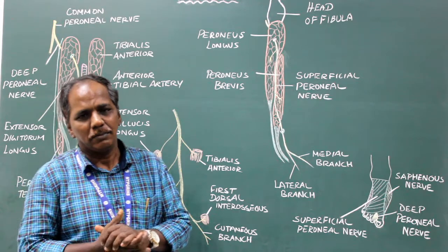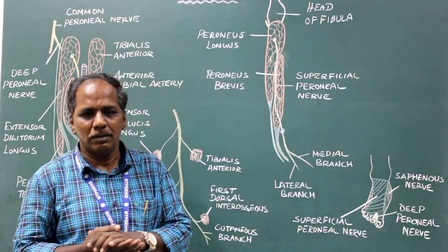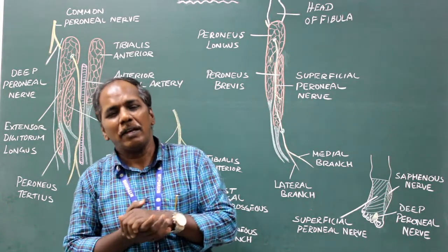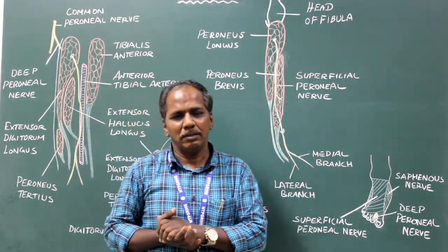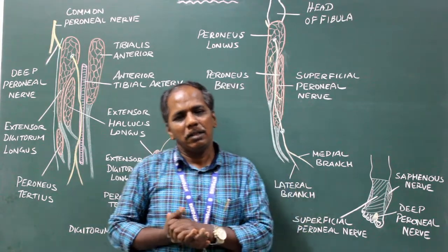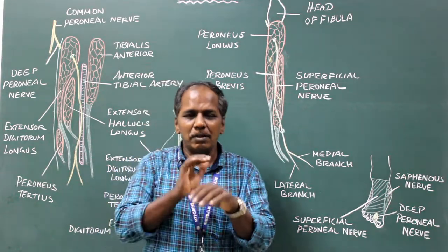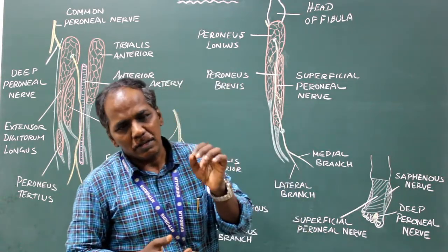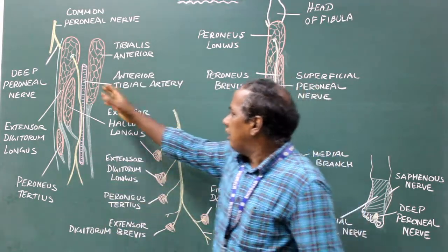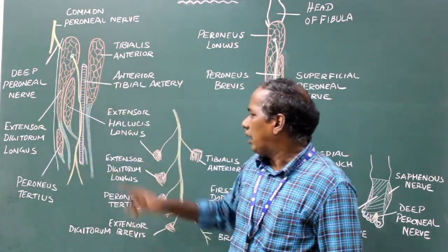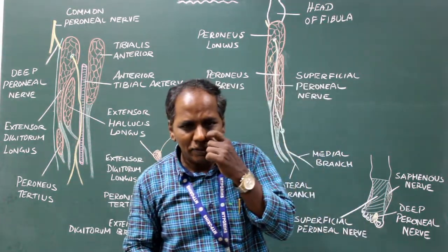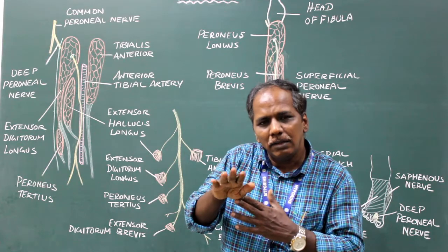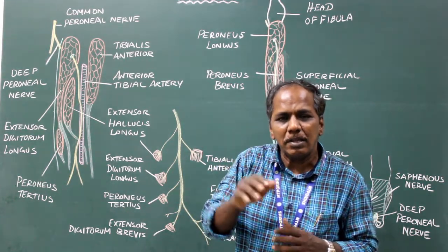Applied anatomy: injury to the deep peroneal nerve results in paralysis of the anterior compartment muscles of the leg. This results in loss of dorsiflexion of the foot, a condition known as foot drop. Since the extensor digitorum longus and extensor hallucis longus are paralyzed, there is also loss of extension of the toes.